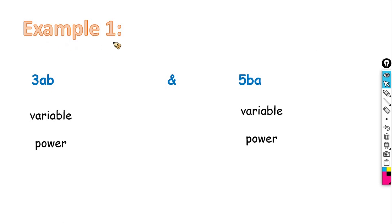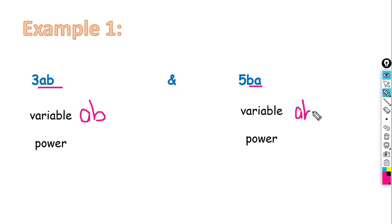Let's look at Example 1. Are these two terms like or unlike? Remember, to know the type we just have to look at the variables, not the constant or coefficient. Both these terms have the same variables, A and B. The power of A is 1 and the power of B is 1. For the second term, the power of B is 1 and the power of A is 1 as well. As both these conditions are satisfied, we can say that these are like terms.